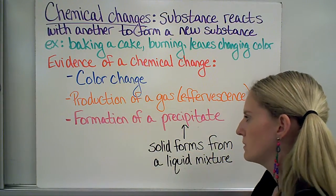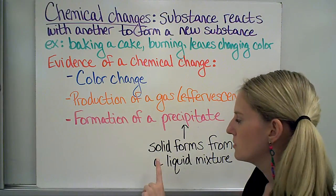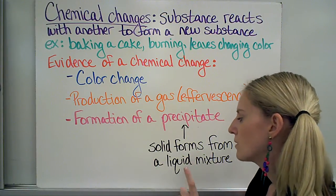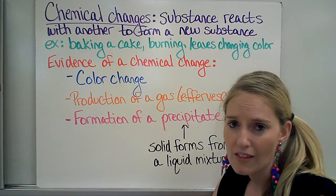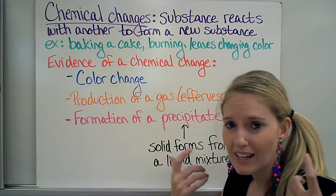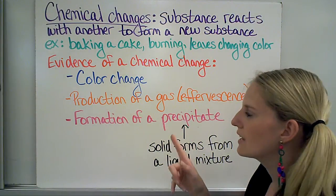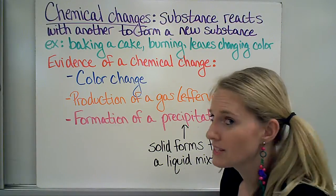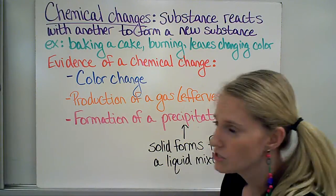Lastly, I have the formation of a precipitate. A precipitate is going to be a solid that forms when I put two liquids together. So if I put two liquids together and I get a solid, that's called a precipitate, and that is a new substance that wasn't there before, so that is a chemical change.